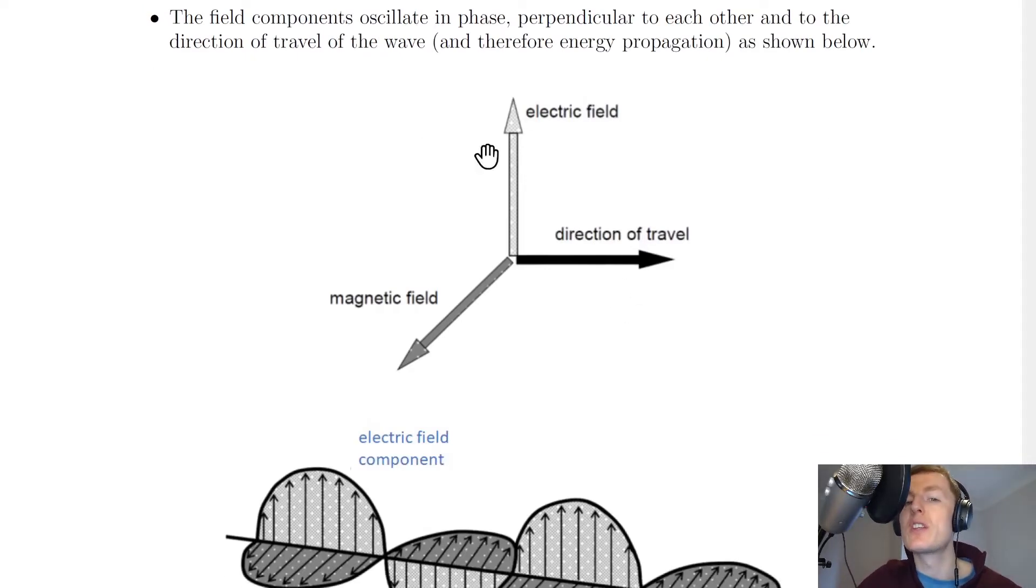Without actually drawing the wave, here are the components of the vectors. We've got the electric field direction up and the magnetic field direction out this way. These two are perpendicular to each other at right angles, but these are also both perpendicular to the direction of travel of the wave which moves to the right.